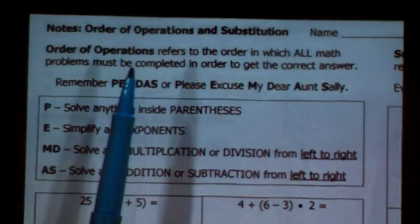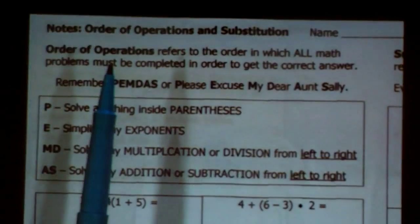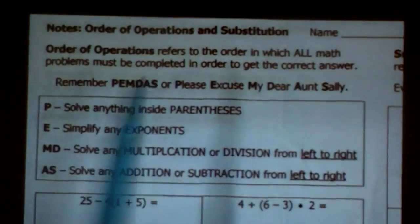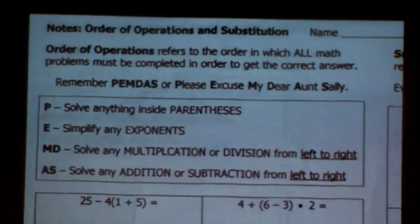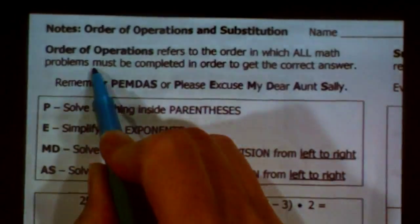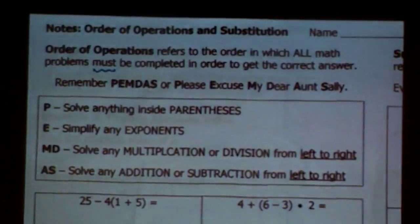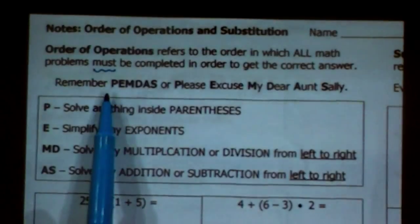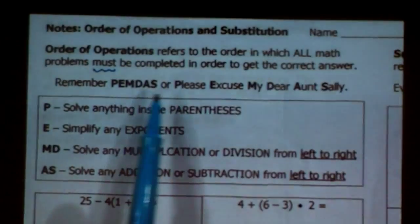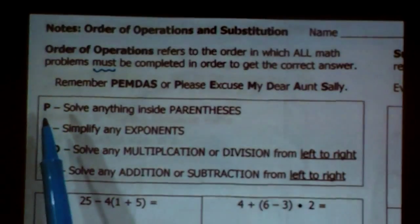Operations in math are things like adding, subtracting, multiplying, and dividing. So order of operations refers to the order in which all math problems must be completed. The must is important there. You have to follow these rules. It's like if there was no speed limit, there would be craziness on the roads. Must be completed in order to get the correct answer. So you may have heard this little phrase, PEMDAS, please excuse my dear Aunt Sally, the P being the parentheses.